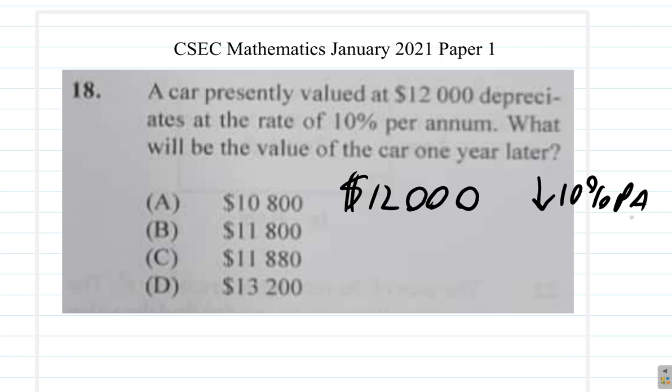Well, you take 10% of $12,000, so 10% of $12,000.